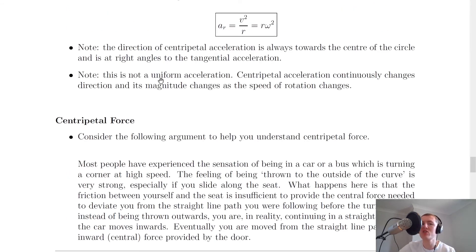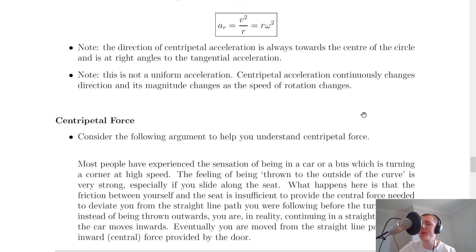The last note is that centripetal acceleration is not a uniform acceleration. It continuously changes direction, and its magnitude changes as the speed of rotation changes. Because the object is continually moving in a circle its direction will be changing, and since acceleration is a vector quantity with both magnitude and direction, the acceleration changes as well. The magnitude will also change as the speed of the object changes around the circle.